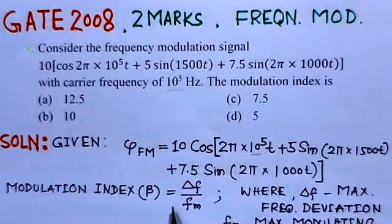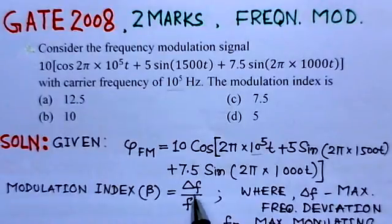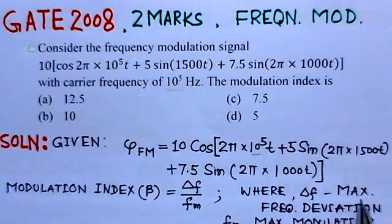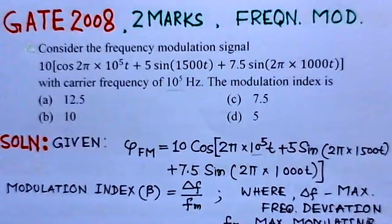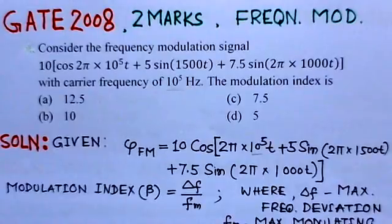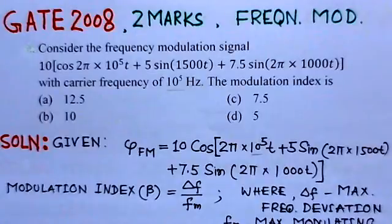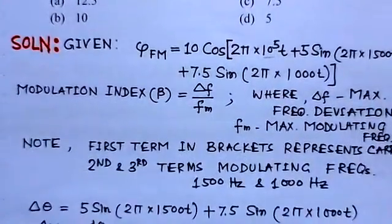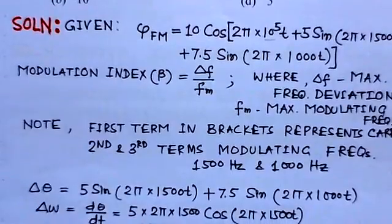The modulation index is given by Δf over fm, where Δf is the maximum frequency deviation and fm is the maximum modulating frequency. We need to determine both of these values.